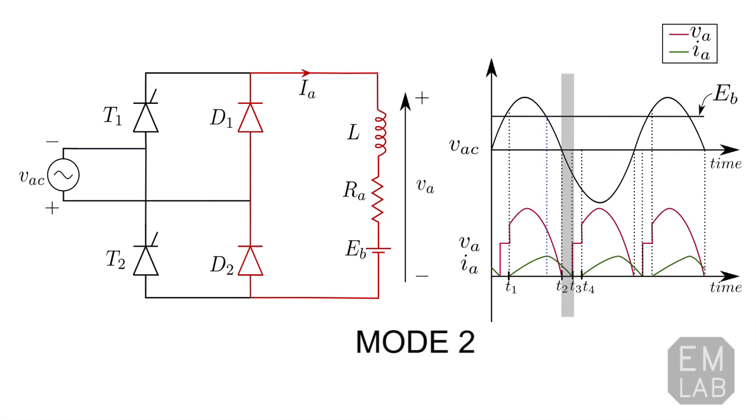So the current starts to freewheel through the diodes D1 and D2 as shown. At this time, the output voltage is the voltage across the diodes which is approximately equal to 0.